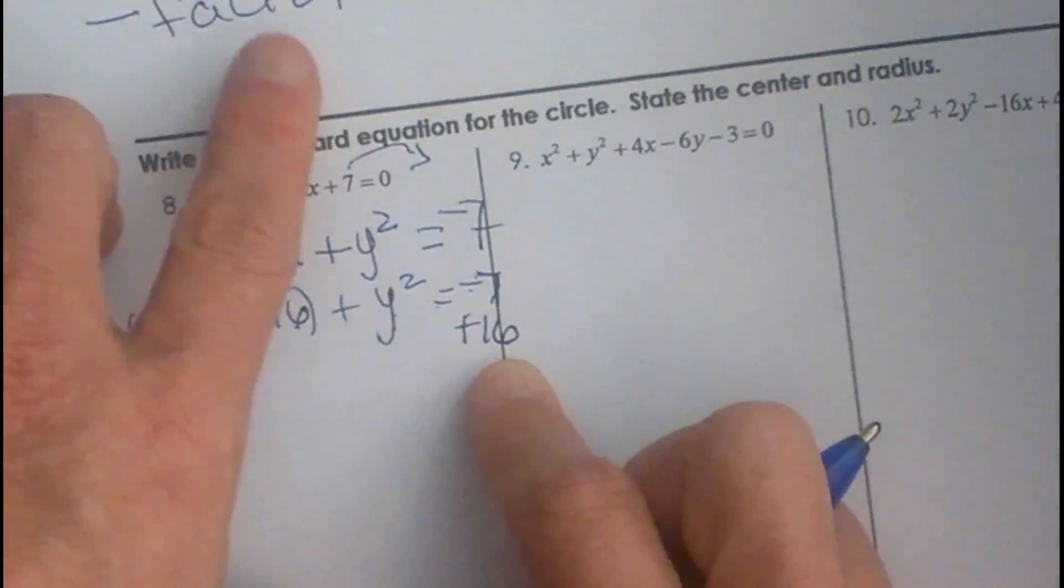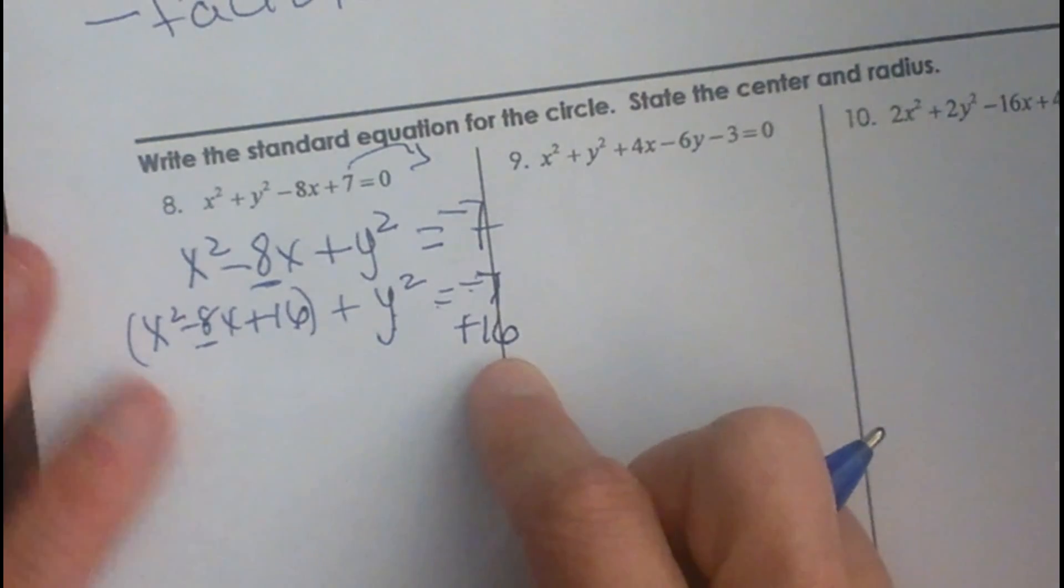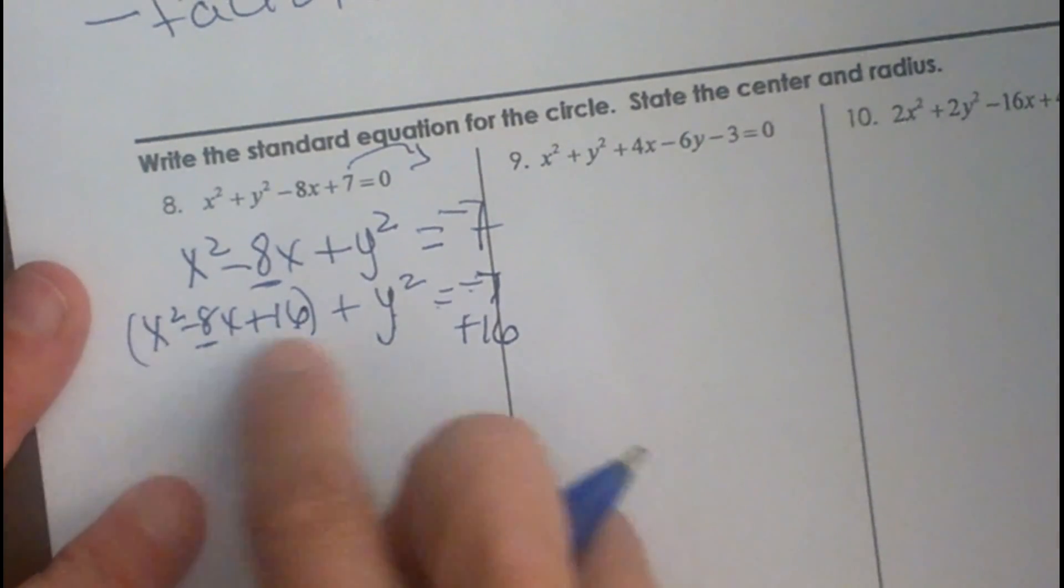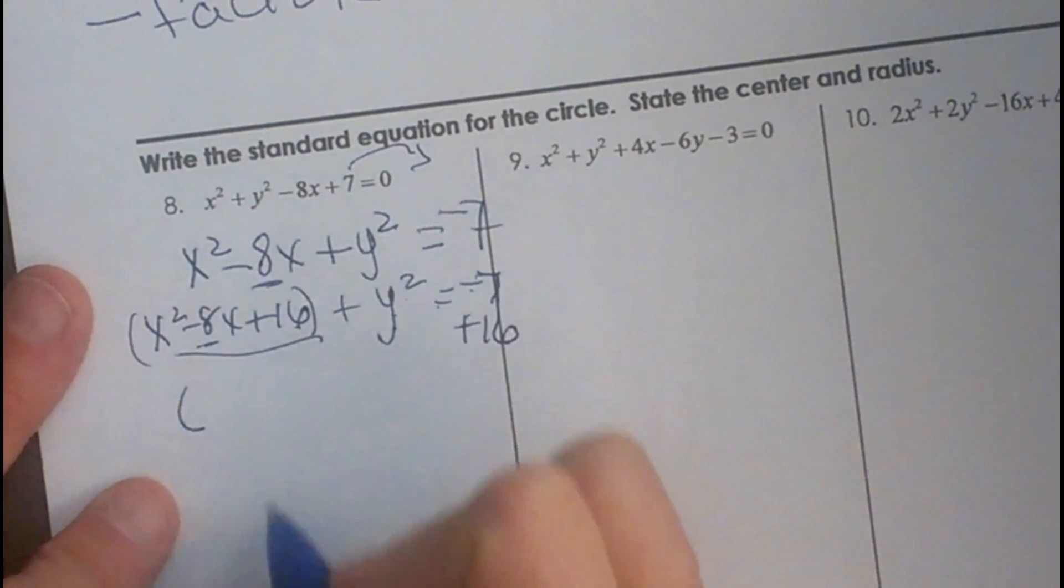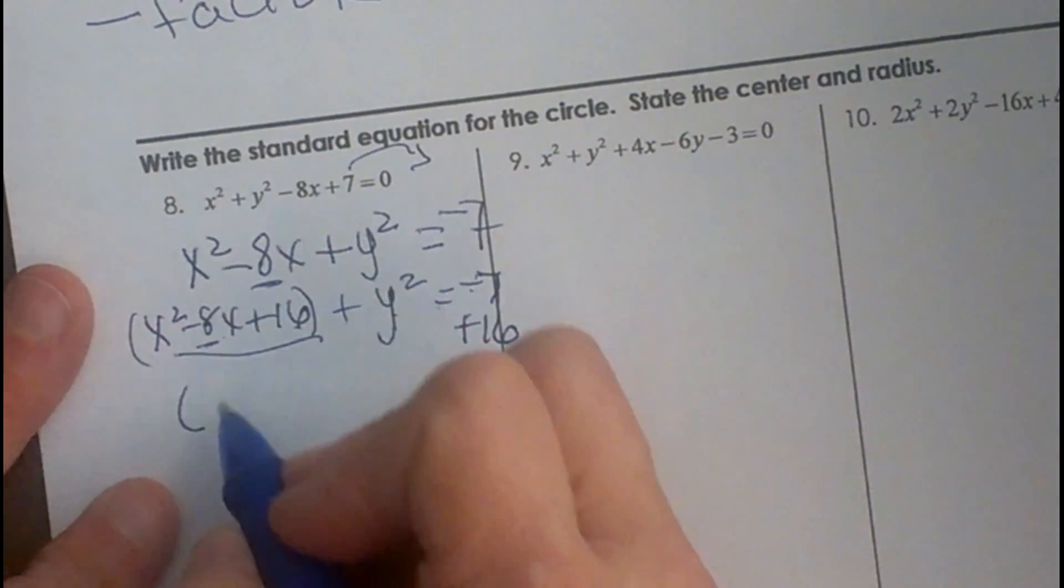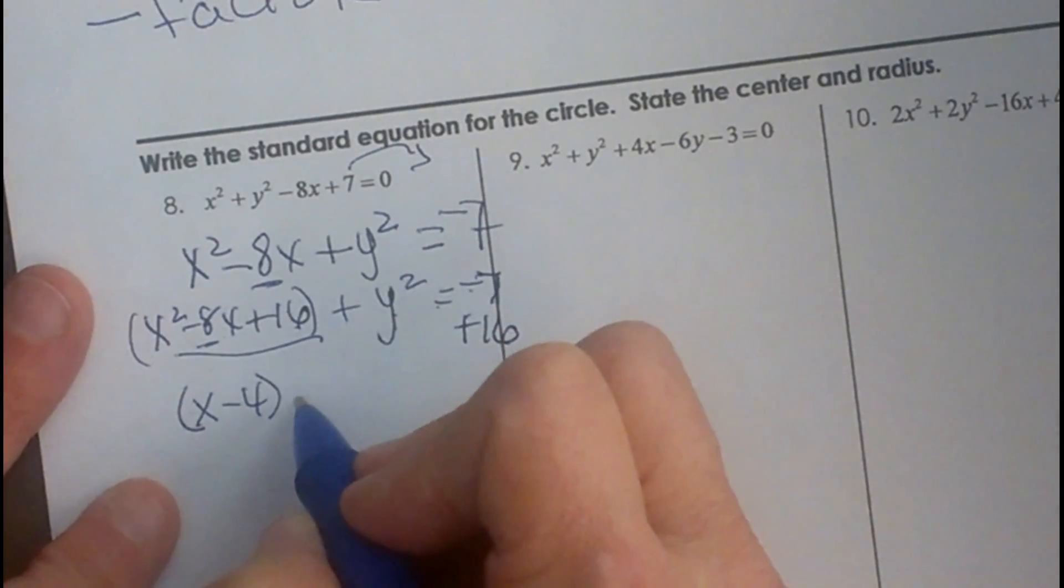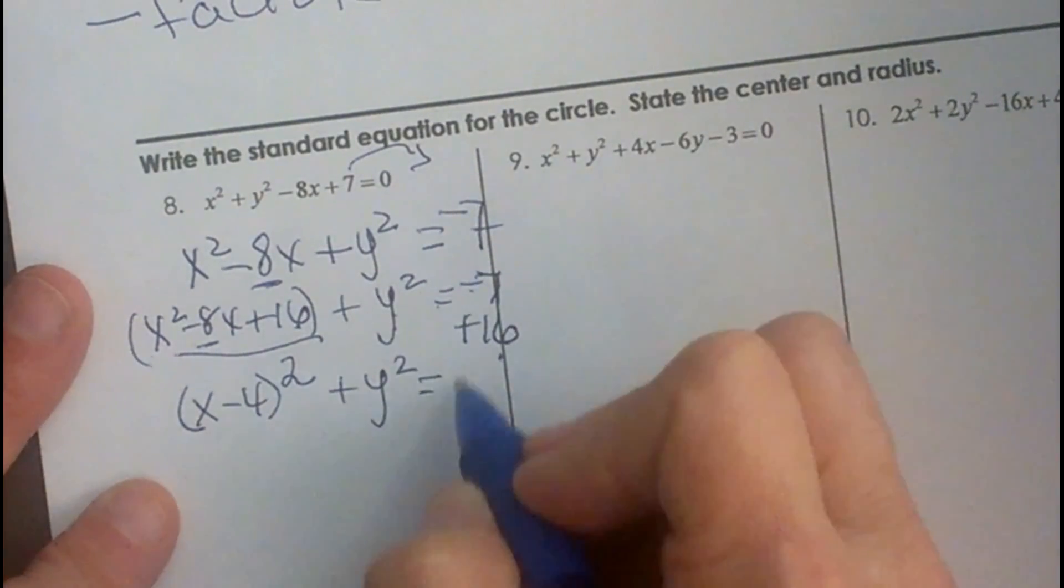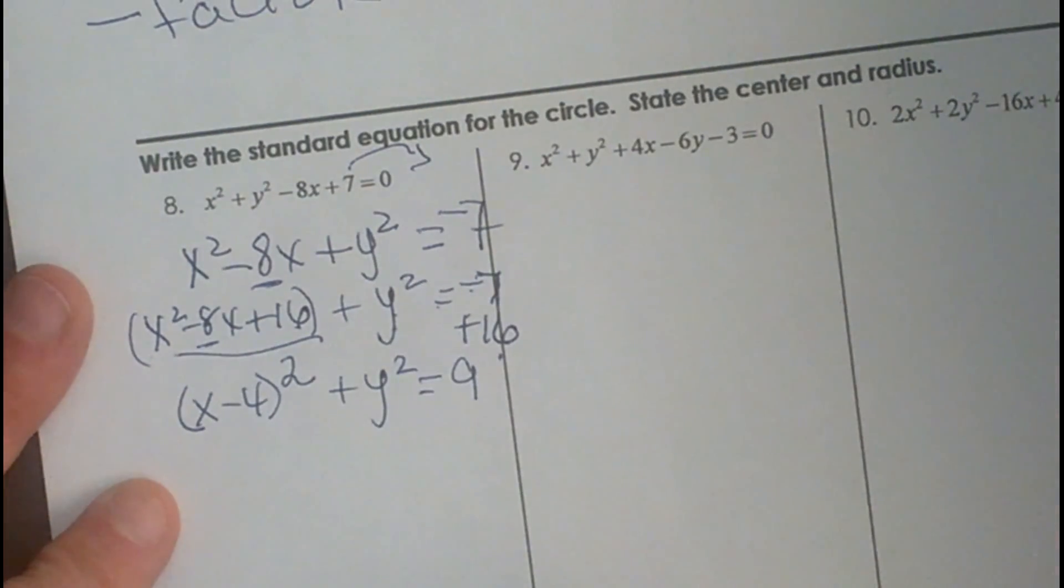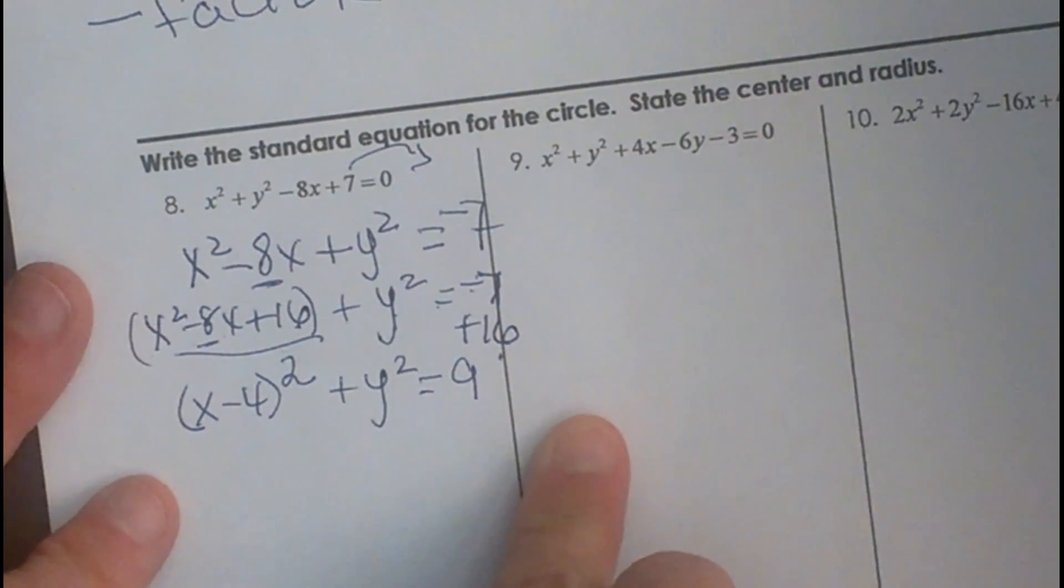Now what we are going to do is we are going to factor. Factor to change forms. So we have to take this trinomial and factor. Well as you can see what we have just created is a perfect square trinomial. It is going to be x minus 4 times x minus 4 or x minus 4 squared plus y squared equals, well negative 7 plus 16 is positive 9. Okay now we have it in standard form.